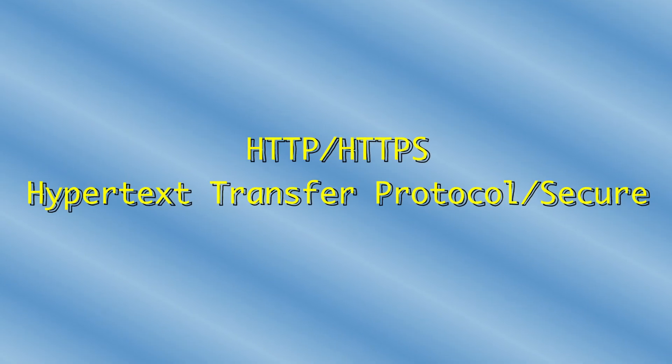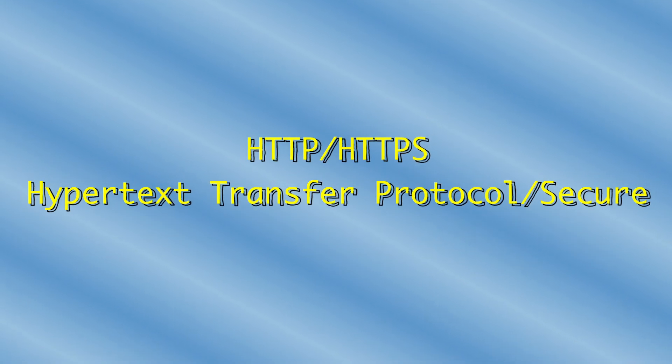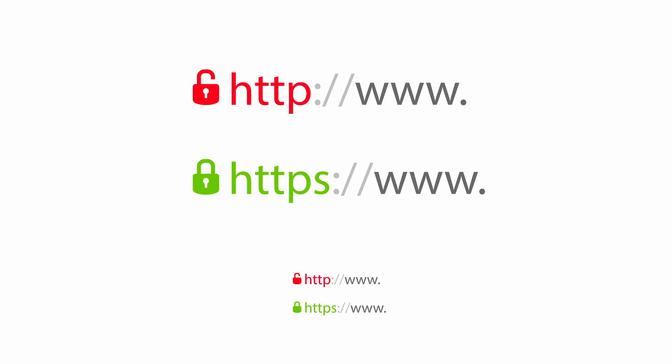Last but not least, we have HTTP and HTTPS. HTTP is the Hypertext Transfer Protocol and the S in HTTPS stands for Secure. The Hypertext Transfer Protocol is an application-layer internet protocol used to transfer data between network devices. HTTP is the unsecure version and HTTPS is the secure version. If you go to a website and the little lock in the left corner of the screen is unlocked, that website is not encrypting your data — so don't enter your password or any critical information. Remember: the S in HTTPS stands for Secure.